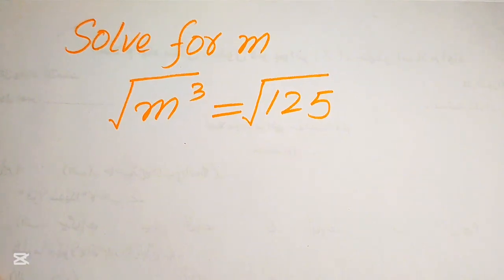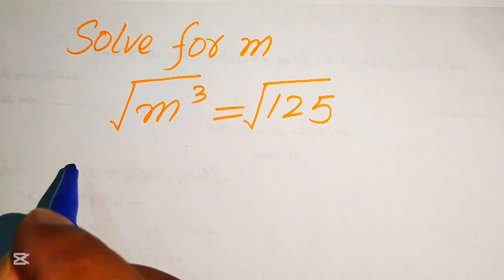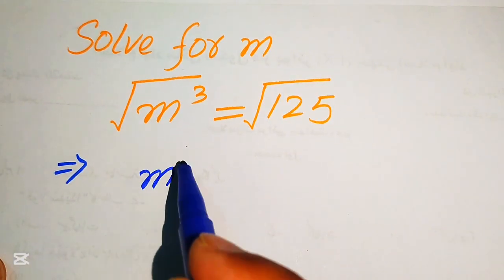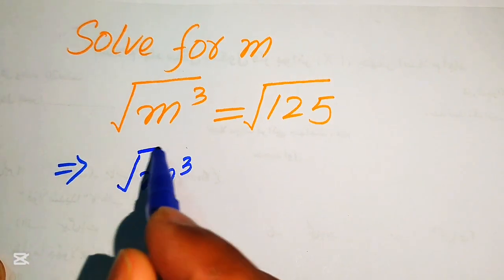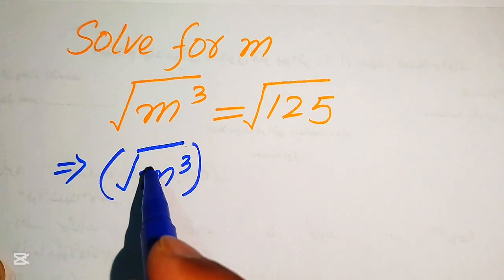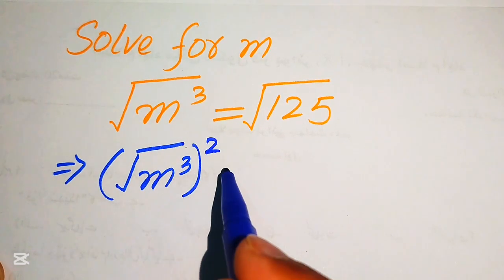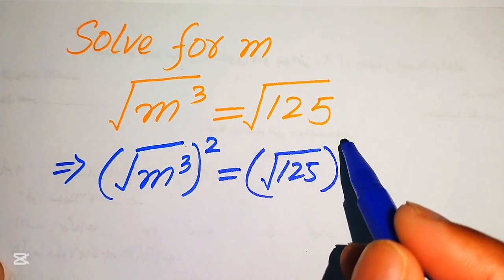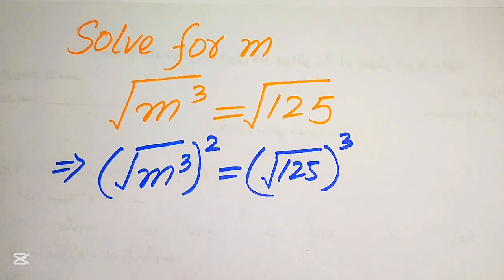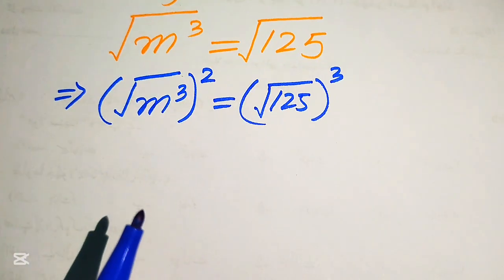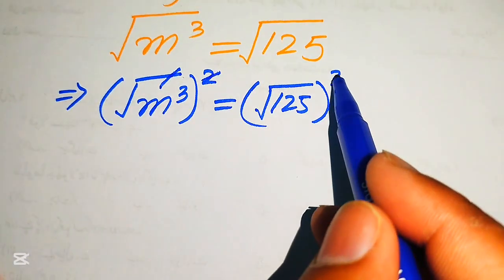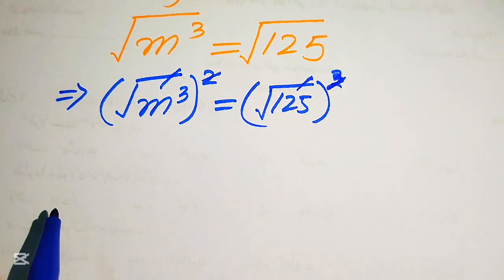Our first target is to eliminate the square root on both sides. In order to eliminate this square root, we need to take the squaring on both sides. When we take squaring, it will be written as square root of m cubed, its whole squared, equals to square root of 125, its whole squared. So this 2 and the square root are gone.